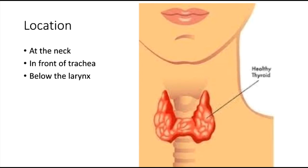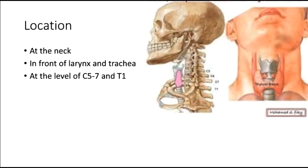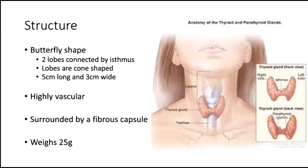The thyroid gland is located at the neck, in front of the trachea, just below the larynx, at the level of C5 to T1 — that is, between the 5th cervical and 1st thoracic vertebrae. They are butterfly shaped, having two lobes connected by an isthmus. The lobes are cone shaped, measuring 5 cm long and 3 cm wide, highly vascular, surrounded by a fibrous capsule, and weighing 25 grams.